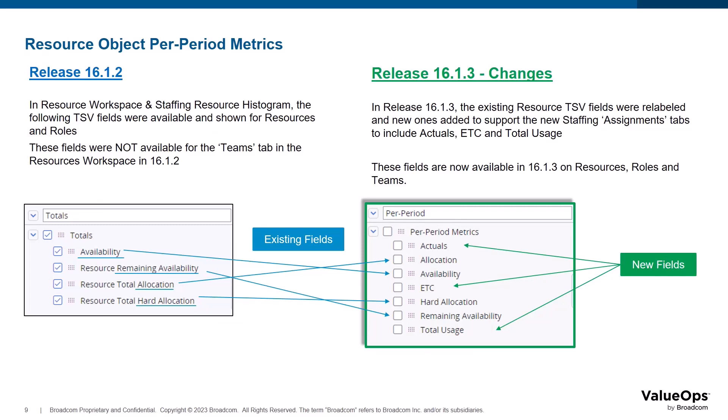To support the new assignments tabs in the staffing workspace, new TSV per-period metric fields were introduced for the resource object. In the resources workspace, for resources, roles, or teams, you will now see three new fields for actuals, ETC, and total usage. The labels on existing fields are updated to reflect common names for the same fields across different workspaces.